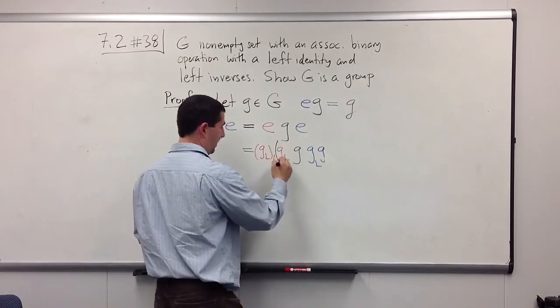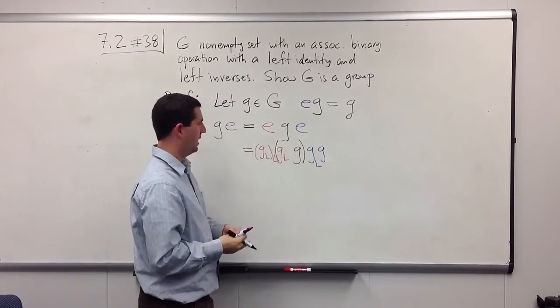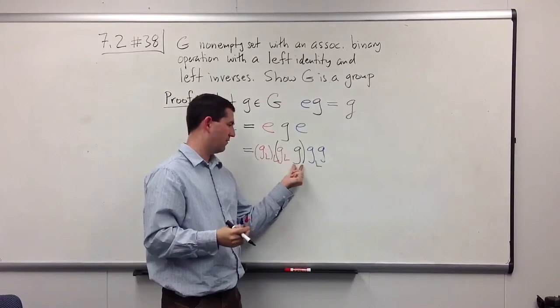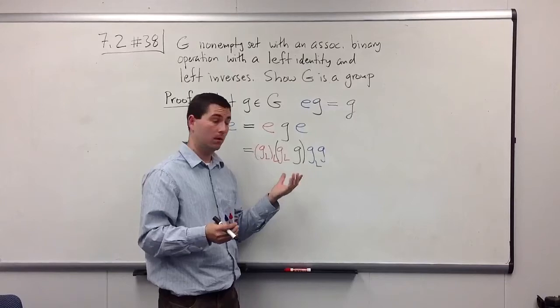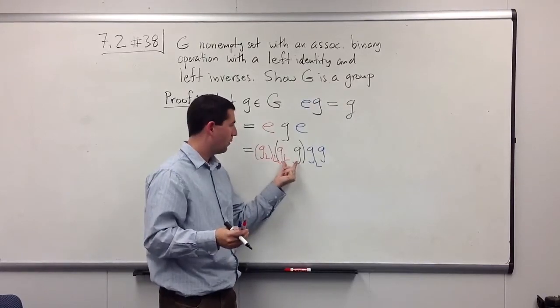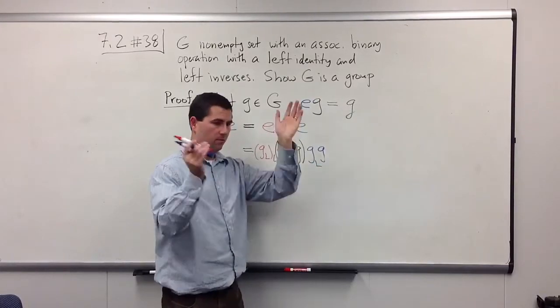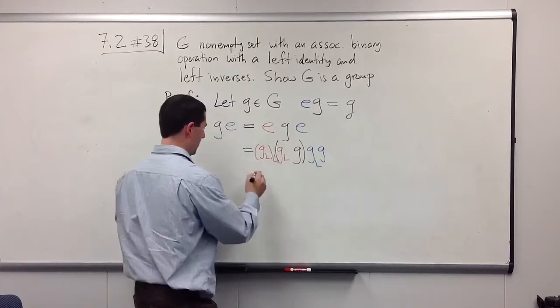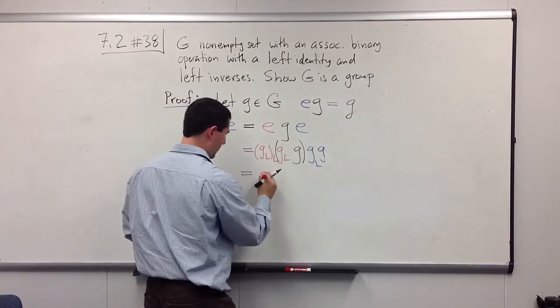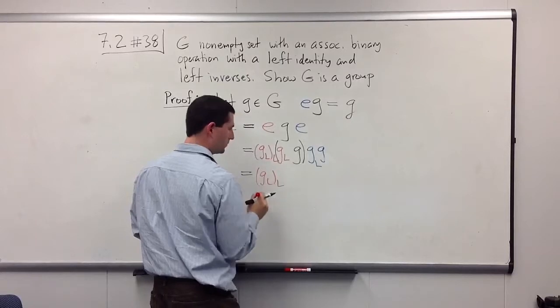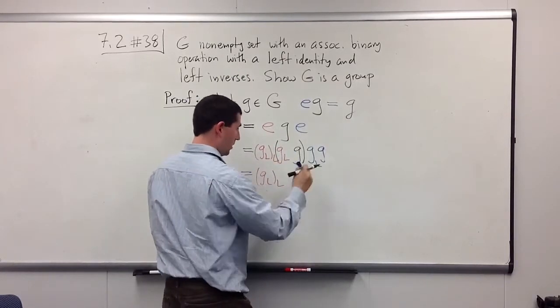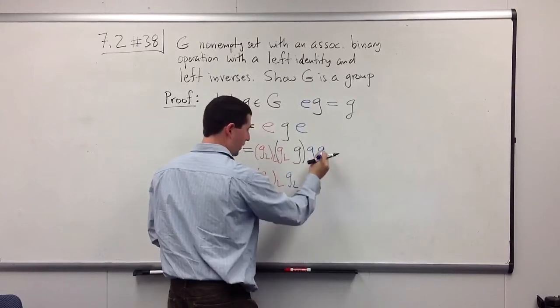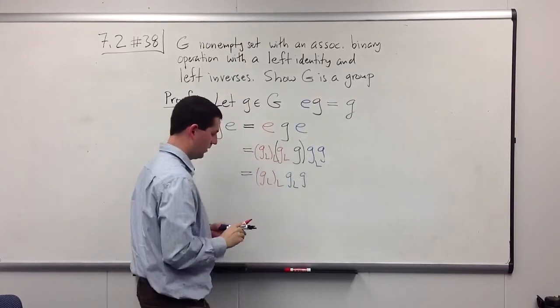All right, now we play an associativity game. If I associate these two in the middle, I notice I have g and its left inverse. When I multiply these, I get back the identity. That's the left inverse. And when I multiply the identity by something else, the identity just goes away. And so I'm going to be left with this original g_ll. This middle part goes away. And then I get g_l followed by a g.